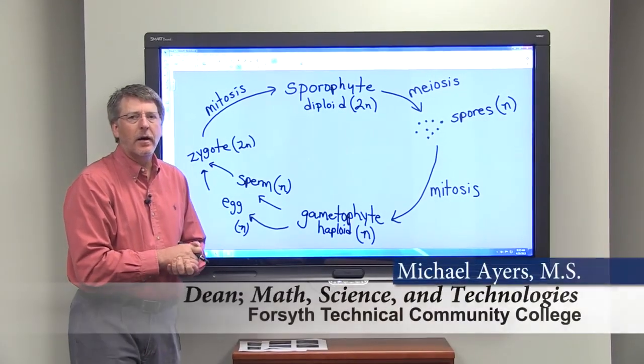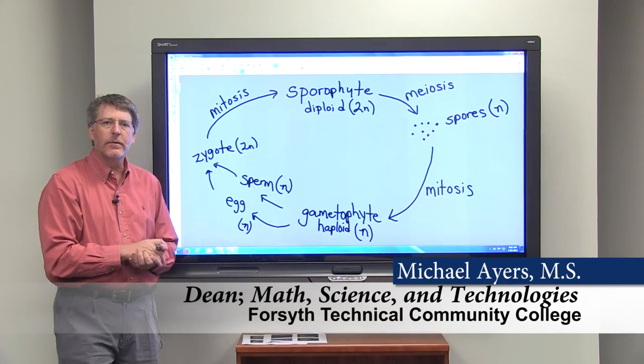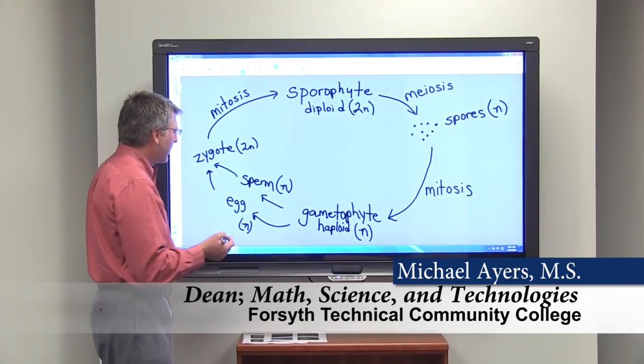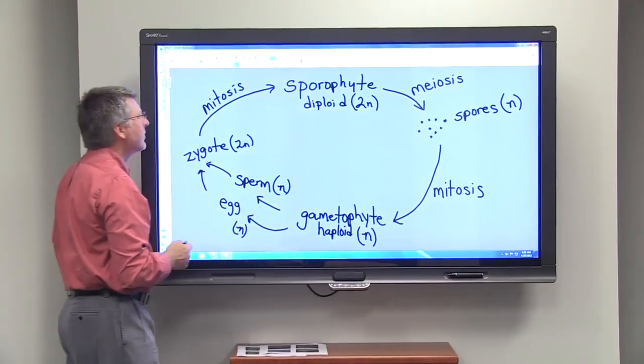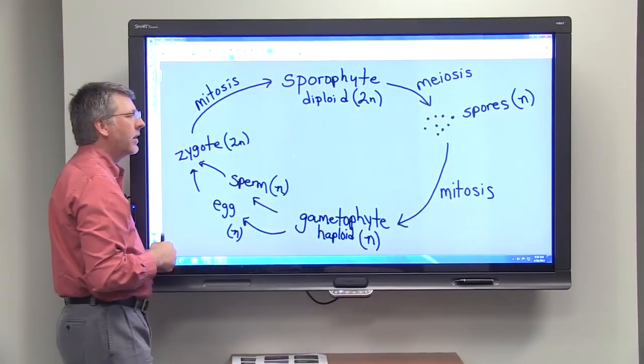So let's look at alternation of generations in more detail and see where the different types of cell division occur. Let's start out with, it's a life cycle, so where we start is really arbitrary, but we'll just start with the sporophyte generation.